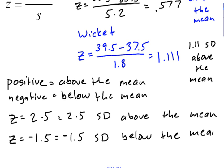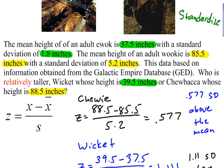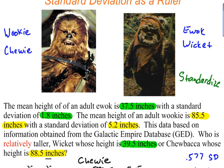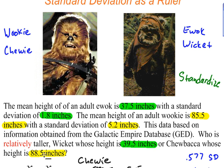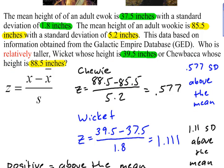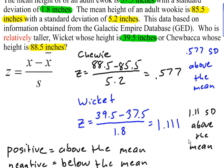So, you can have negative z-scores. Going back to our problem, we see that even though Chewbacca is definitely taller than Wicket, when you look at the z-scores, Wicket is relatively taller because his height is 1.11 standard deviations above the mean.